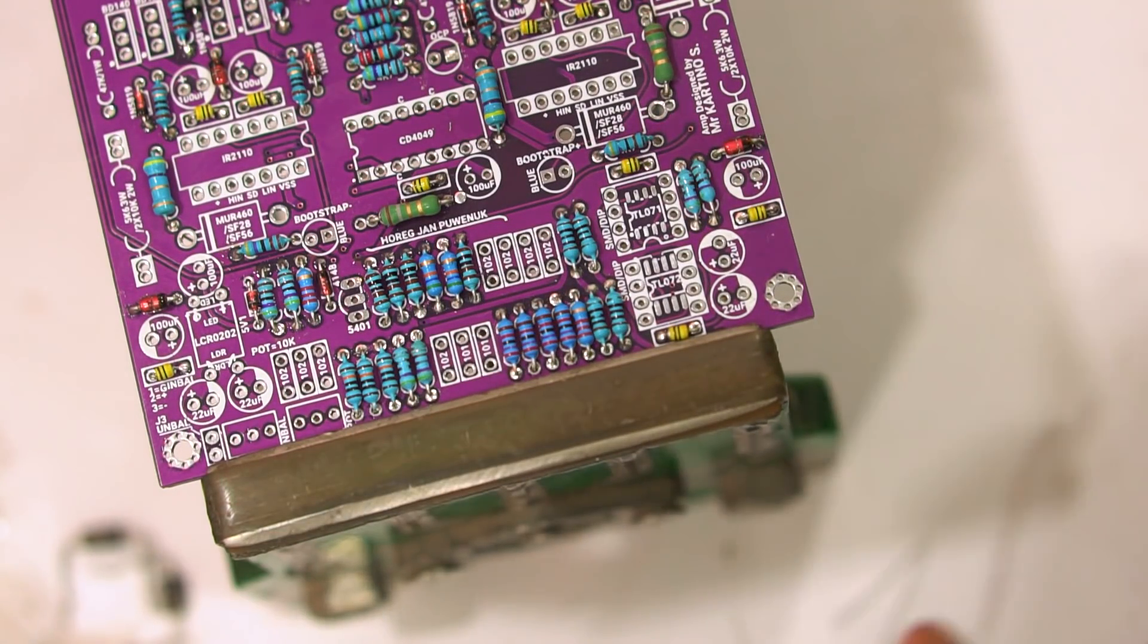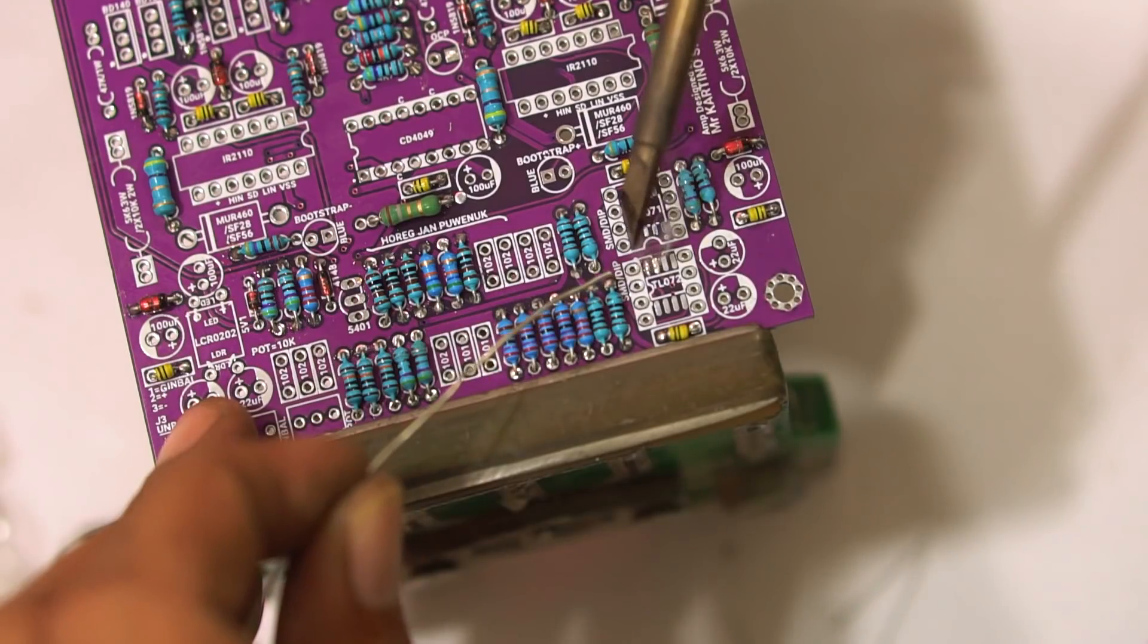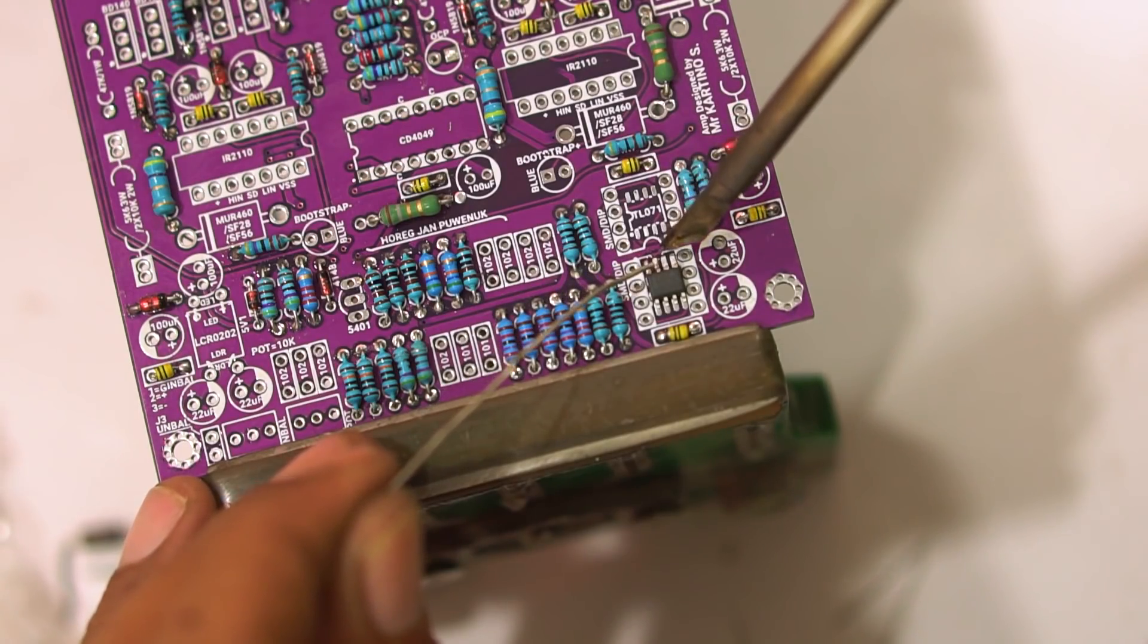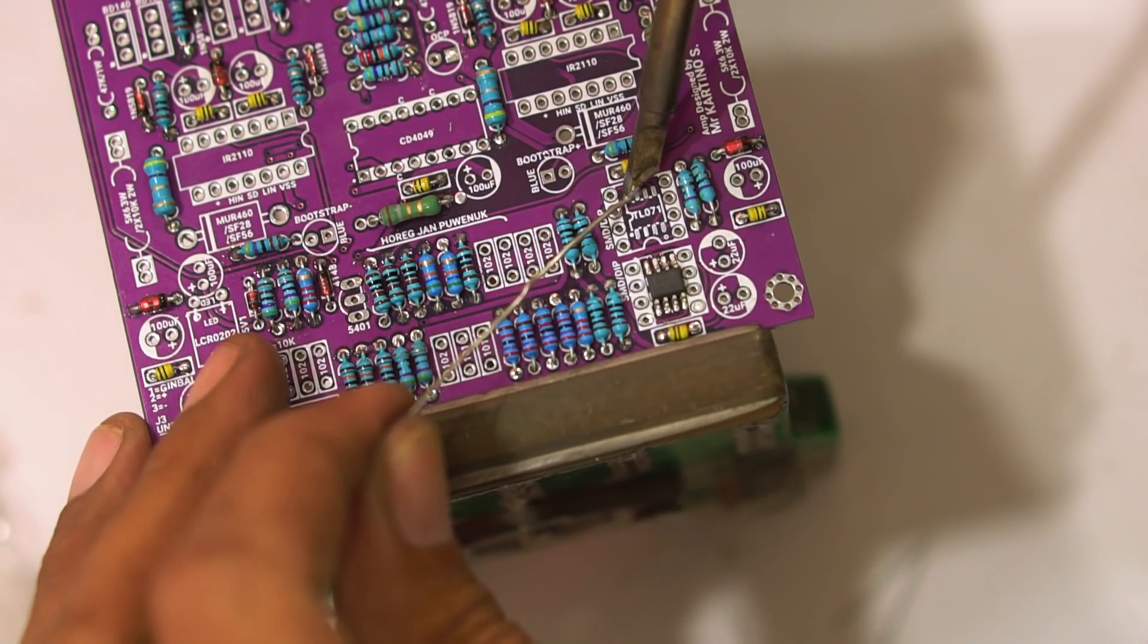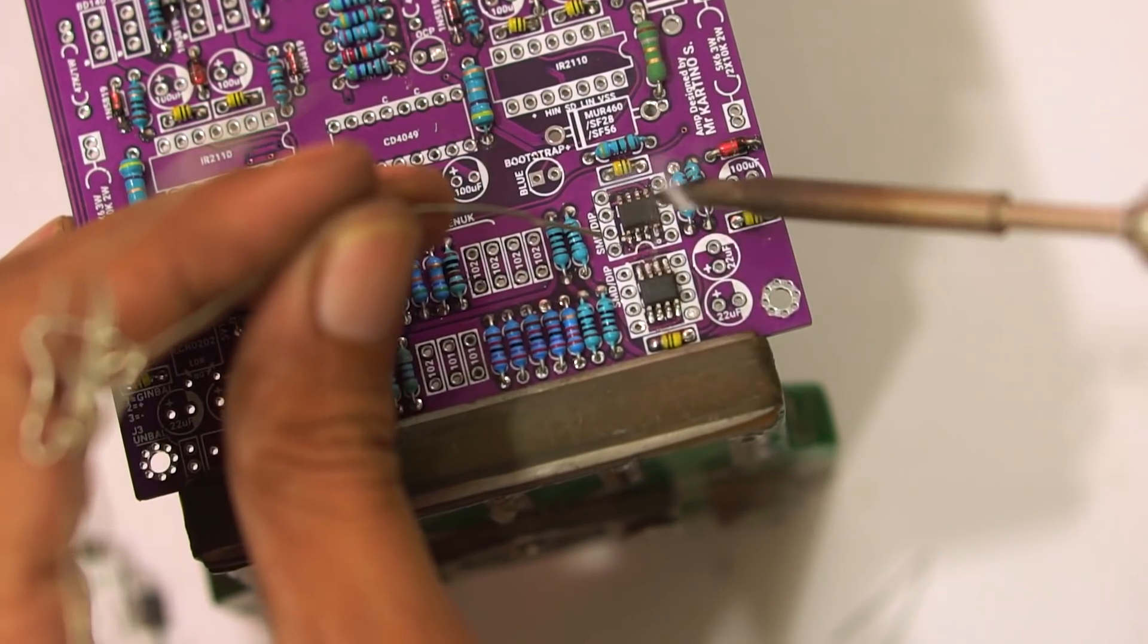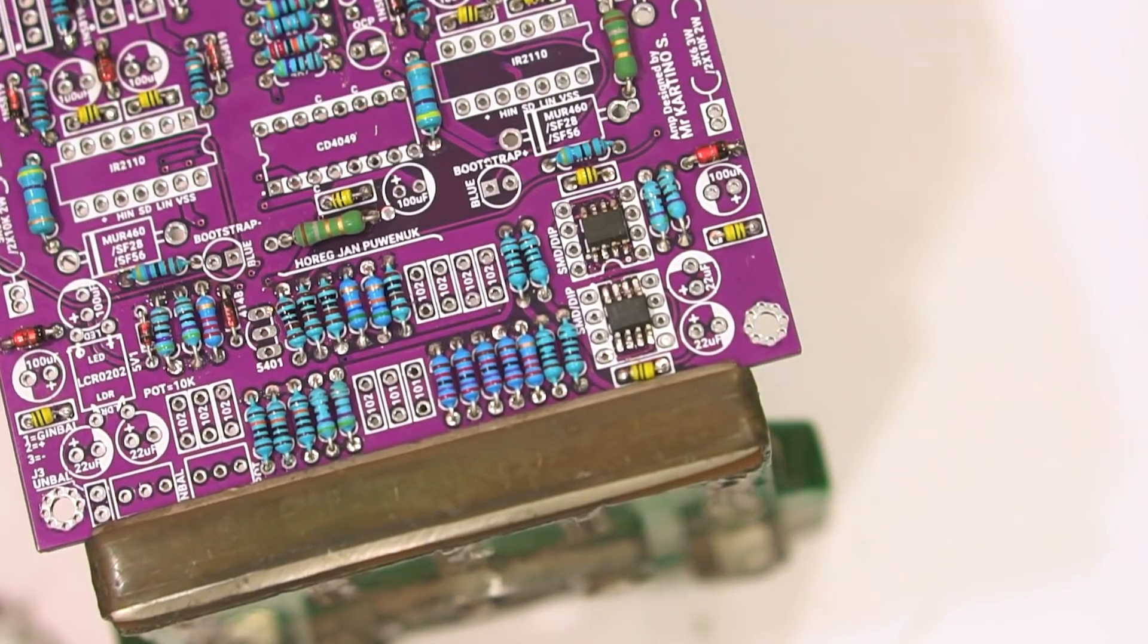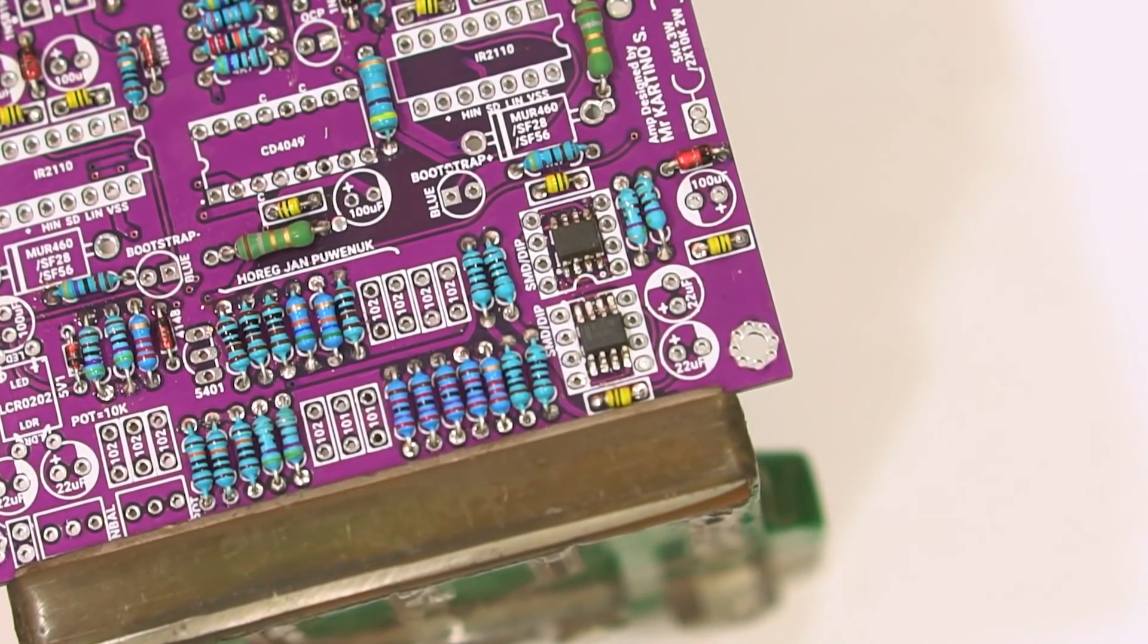Before installing capacitors, I will first install the op-amp IC and TL071 comparator. Because I'm using SMD IC, if all components are already installed it will be difficult to solder the SMD IC. These two ICs can alternatively use SMD or DIP. Use only one type - if you're already using SMD IC, you don't need to install the DIP and vice versa.